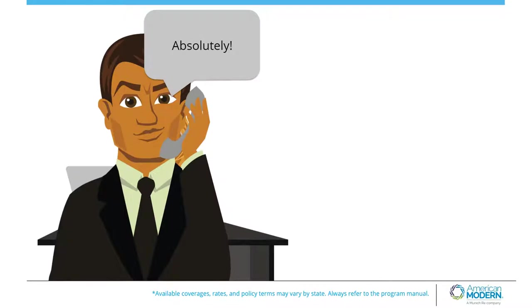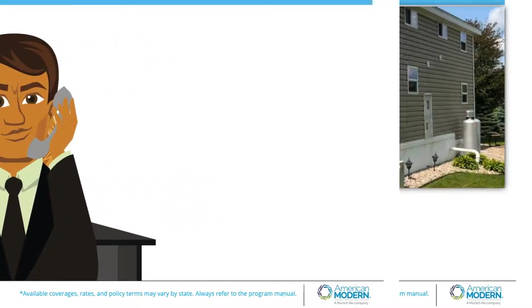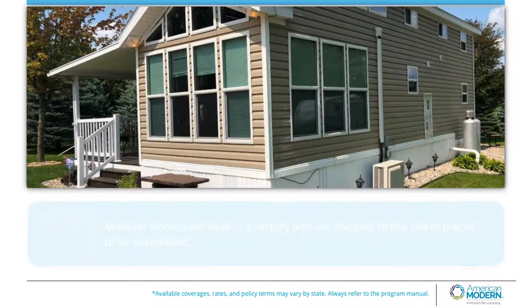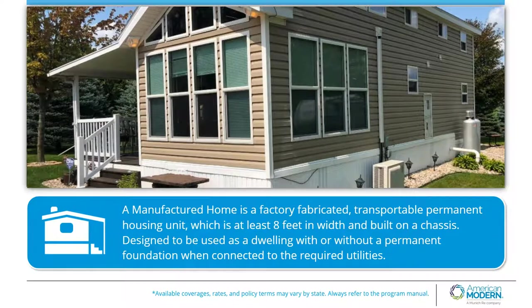Absolutely, I'd be happy to assist. Modular homes are built in a factory and are shipped to the site in pieces to be assembled. A manufactured home is a factory-fabricated, transportable, permanent housing unit which is at least 8 feet in width and built on a chassis, designed to be used as a dwelling with or without a permanent foundation when connected to the required utilities.